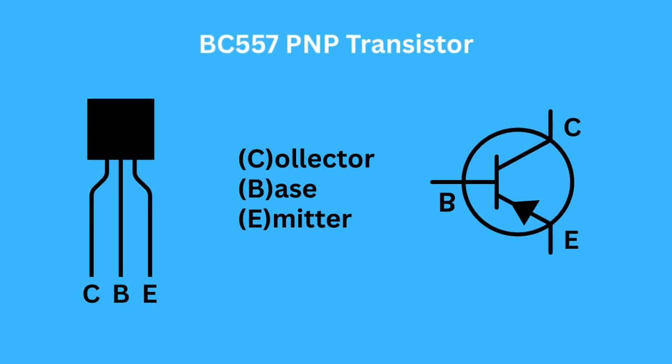A BC557 transistor is similar to the BC547, but there is an important difference. The BC557 is a PNP transistor. If the BC547 is a switch that turns on when you push a button, the BC557 is like a switch that turns on when you release a button, or when there is a lack of a specific electrical signal.